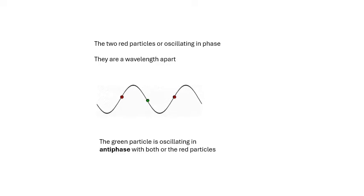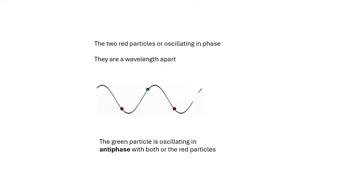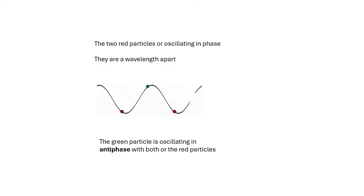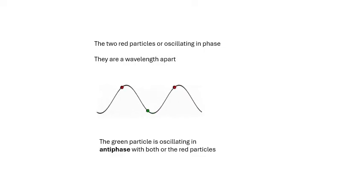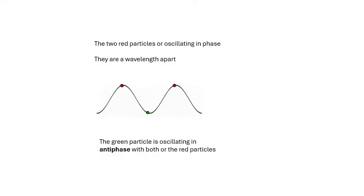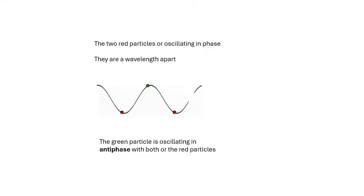The two red particles are in phase and a wavelength apart. The green particle does the opposite — when the red ones go up, the green one goes down, and vice versa. We say the green particle is in anti-phase with the red particles. This will be important later when we look at wave interference.